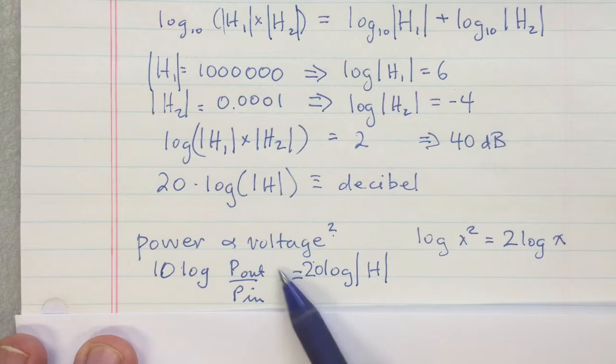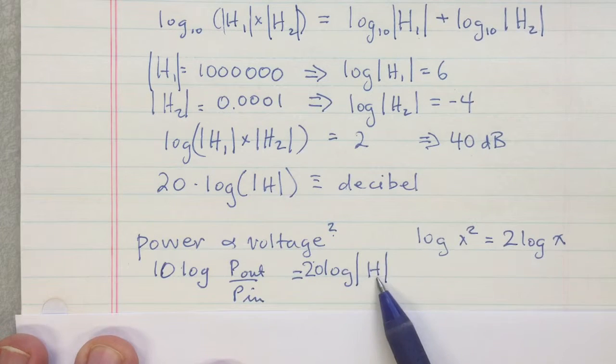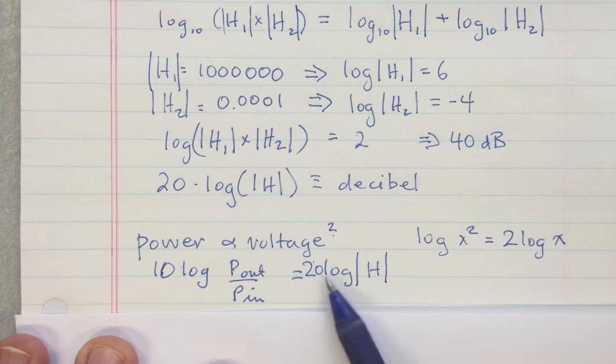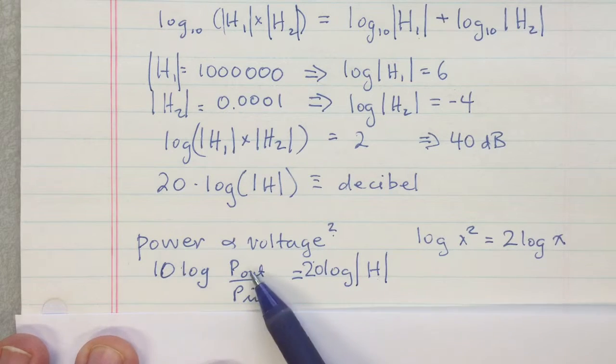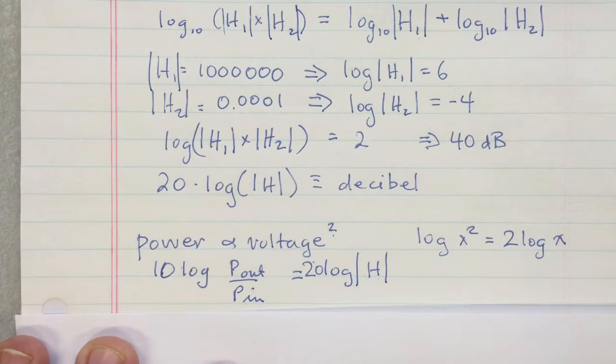And that means that the system has the same gain in decibels whether you're looking at it in terms of power or in terms of voltage. It's just when you look at it in terms of voltage, you have to remember to multiply by twenty. If you look at it in terms of power, you have to remember to multiply by ten.